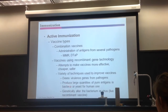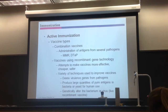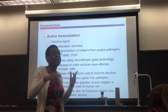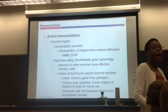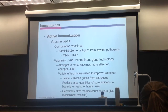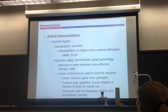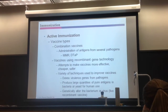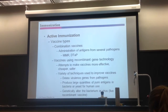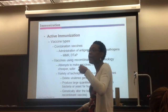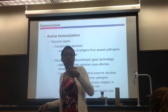Another recombinant approach is using bacteria or yeast to mass-produce antibodies or antigens cheaply. We used to get antibodies from other people or horses, which was expensive. But bacteria and yeast grow quickly and cost little to maintain, so you can mass-produce antibodies or antigens to inject into people.